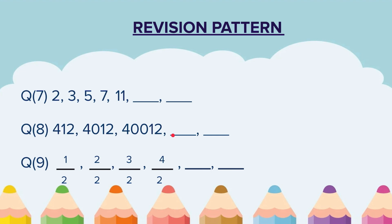Question 9. The sequence is: 1 by 2, 2 by 2, 3 by 2, 4 by 2. You have to write the next two numbers.